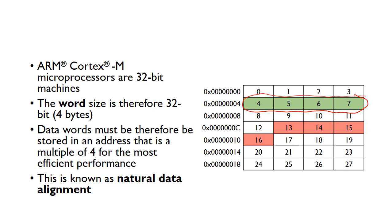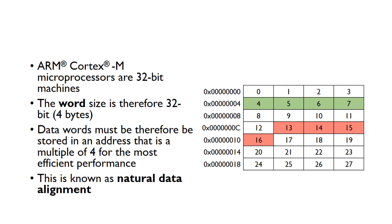Because if you stored starting at address 13, for example, you can see it's going to go off one row and start on the next one. So for most efficient performance, it's best to have what's called natural data alignment, and that means storing data at addresses that are multiples of 4 - so 0, 4, 8, 12, 16, and so on.